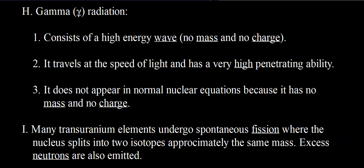If gamma rays are written in a nuclear equation, the daughter nucleus ends up with the same composition but less energy — it's a way for the nucleus to release excess energy. Gamma radiation often accompanies other types of decay processes. Many trans-uranium elements — those after uranium on the periodic table — undergo spontaneous fission, where the nucleus splits into two isotopes of approximately the same mass, with excess neutrons and gamma rays also emitted.